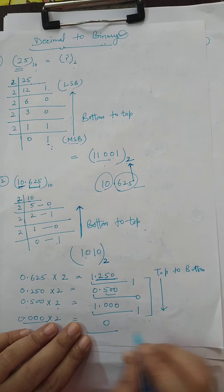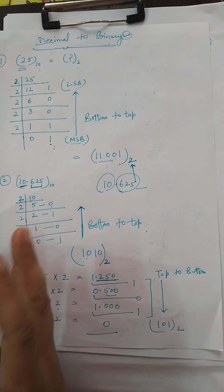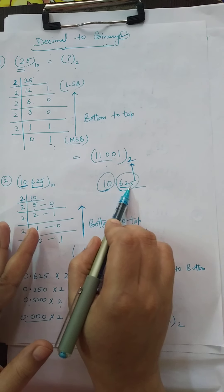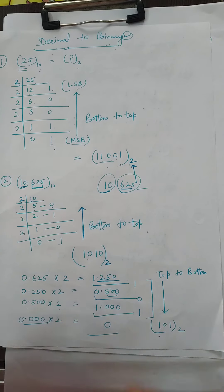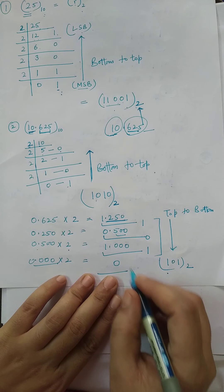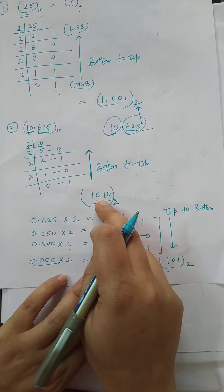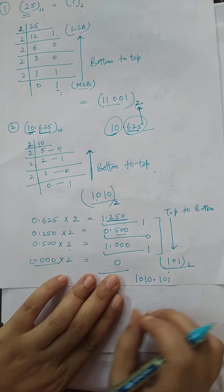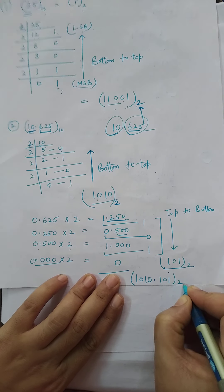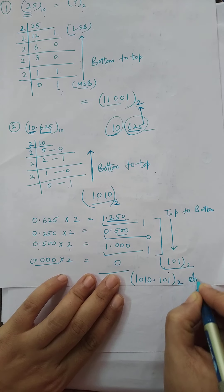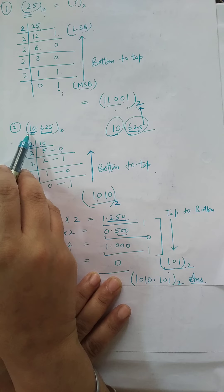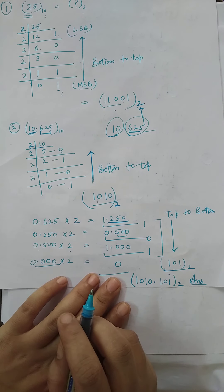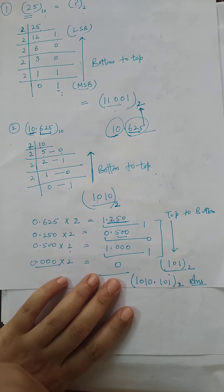Read from top to bottom: 101, with base 2. The number 10.625 has two parts — the whole part answer was 1010 and the fraction part answer was 101. We combine them with a decimal point to write the complete answer: 1010.101 in base 2. So this is how we can convert any decimal number to a binary number. The answer for the decimal to binary conversion of 10.625 is 1010.101.